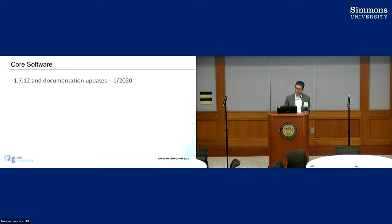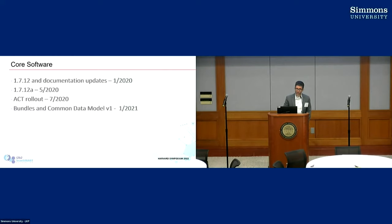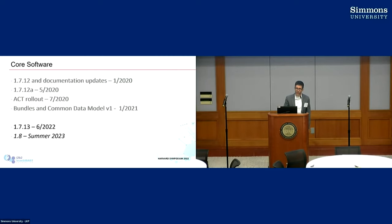Things that have happened with I2b2 core software since the beginning of the pandemic: right at the beginning, we released 1.7.12 and then an update to it. We rolled it out to ACT, the data network, and documented some important things. Then this summer we released 1.7.13. The next release, we're planning to call 1.8, just to break the 1.7 cycle, and because we'll be bundling the new user interface with it — so that feels like a big change.